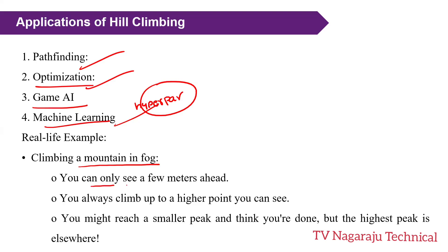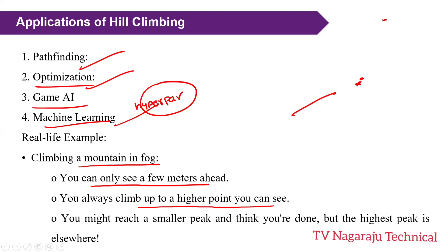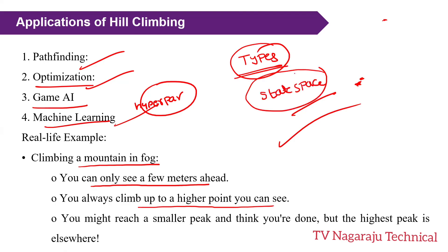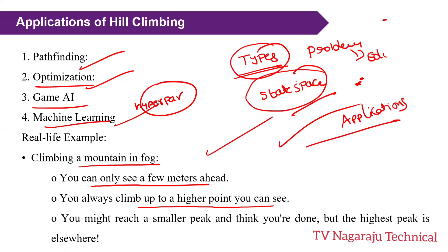To conclude with an analogy: suppose you are climbing a mountain in fog. You can only see a few meters ahead and always climb to the highest visible point. You might reach a smaller peak, assuming it is the maximum, but the highest peak may be elsewhere. This is the concept of the hill climbing algorithm. We discussed what hill climbing is, its types, state space terms, problems, solutions, and applications.